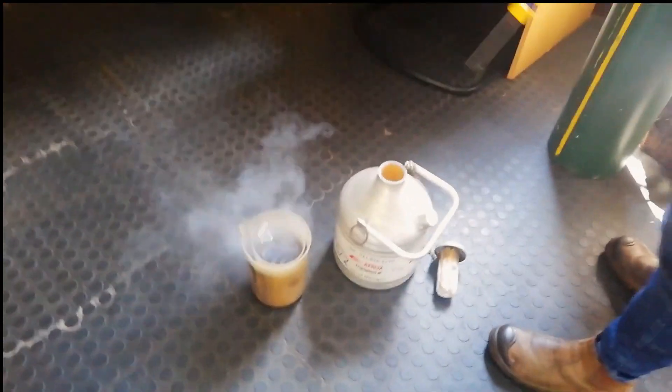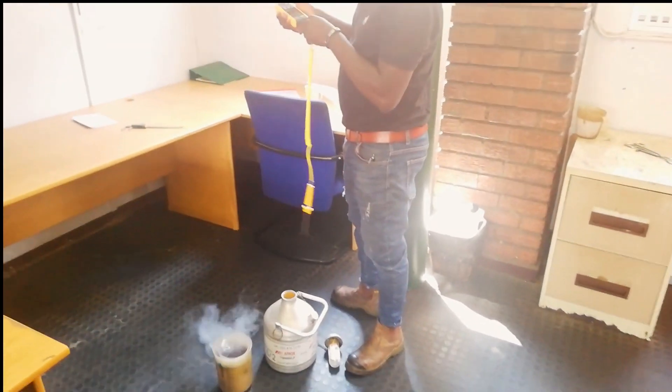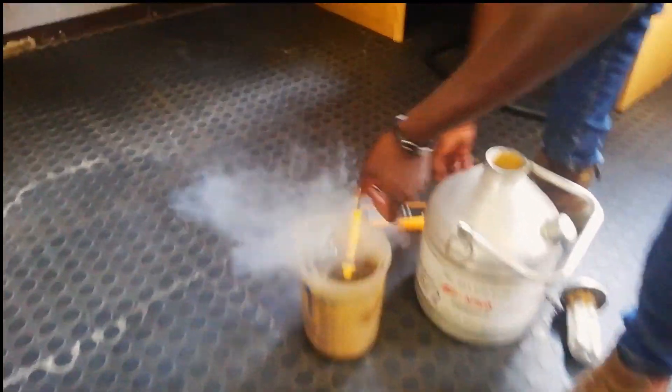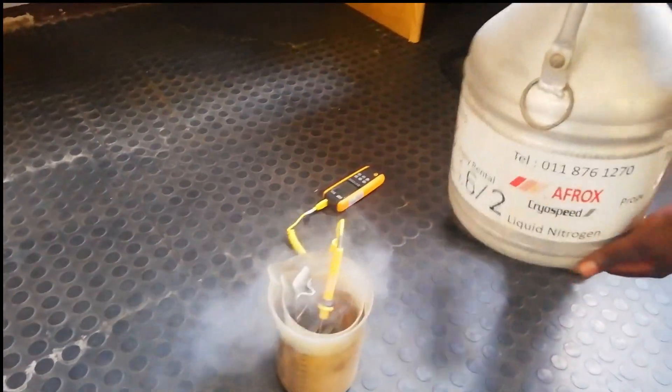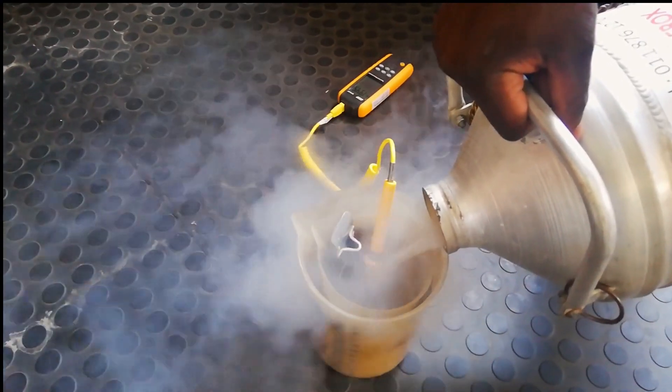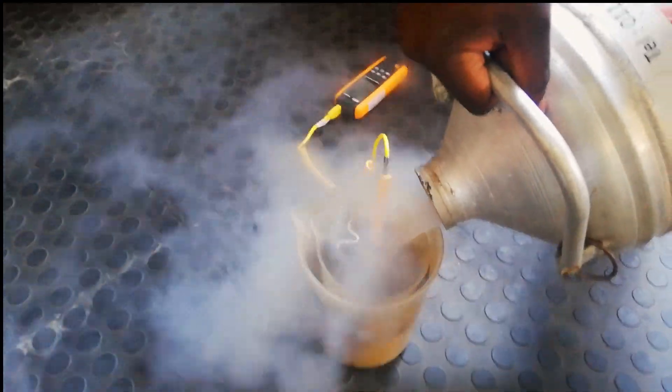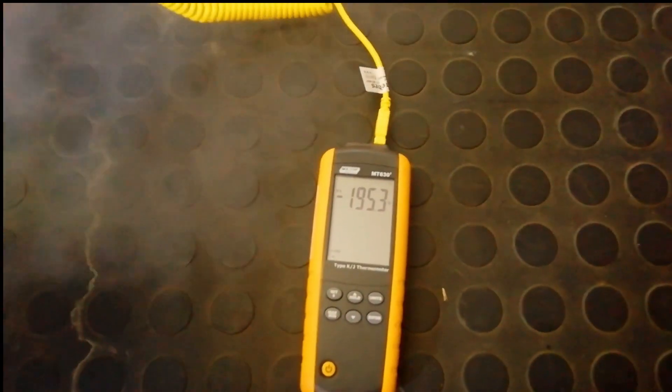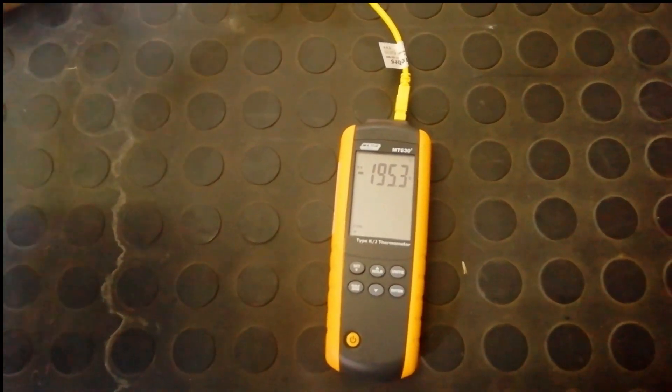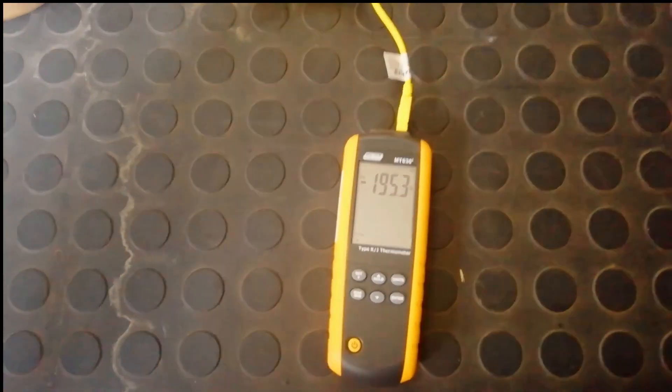So now you have our thermometer. As you can see, let me get closer. Let me get the temperature for you. So check the temperature. Minus 195. Wow. In the tolerance, because I said we need to read between minus 195 up to minus 196. That's really great.